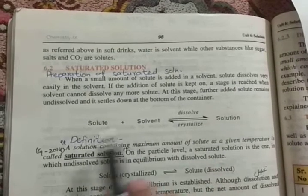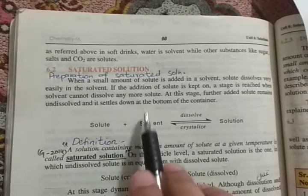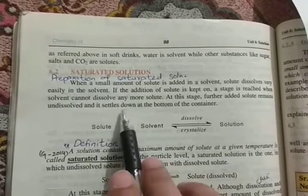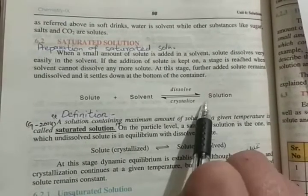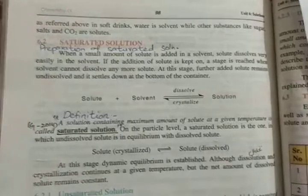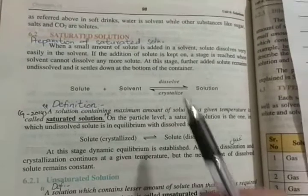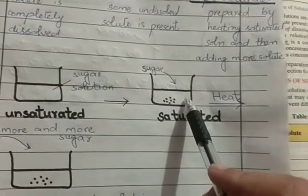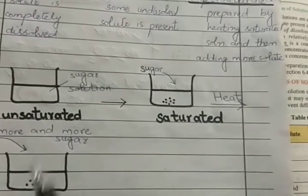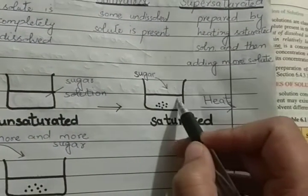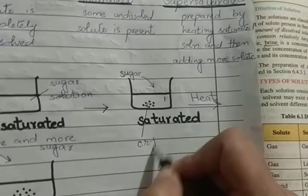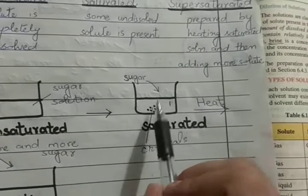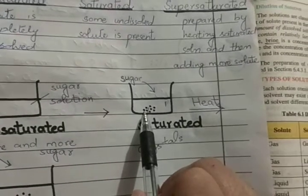At that stage, further added solute remains undissolved and settles down at the bottom of the container. In the solution, the solute is present in both dissolved form and crystallized form. This is a saturated solution where sugar is present partly dissolved and partly as crystals.